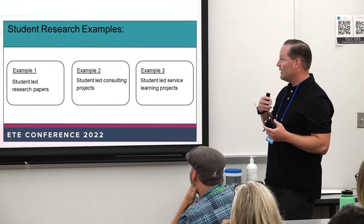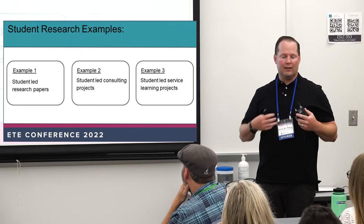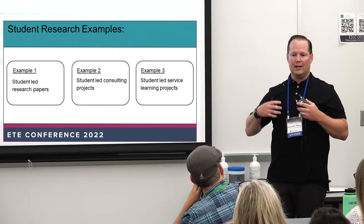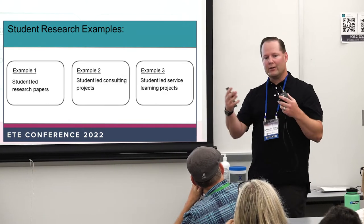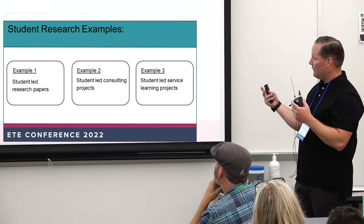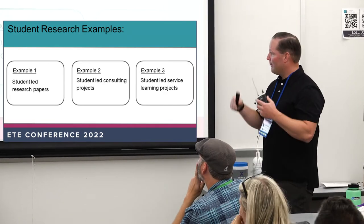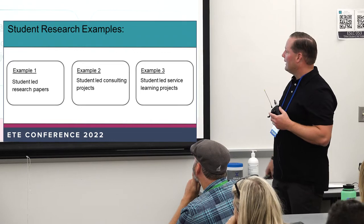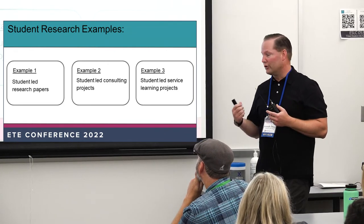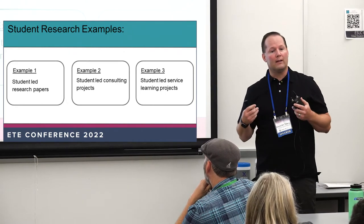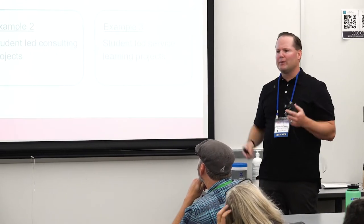There are three examples of student research I use in my own teaching. First is traditional student-led research papers — in my context, teaching leadership, students apply a particular leadership theory and analyze the leadership of past leaders or contemporary leaders. Second, students can partner with outside organizations and actually do research with existing companies about particular needs they have. Third, students can engage in student-led service learning projects — in my leadership class, students identify a cause they want to contribute to and develop a way to push it forward. These are three examples of different types of research.